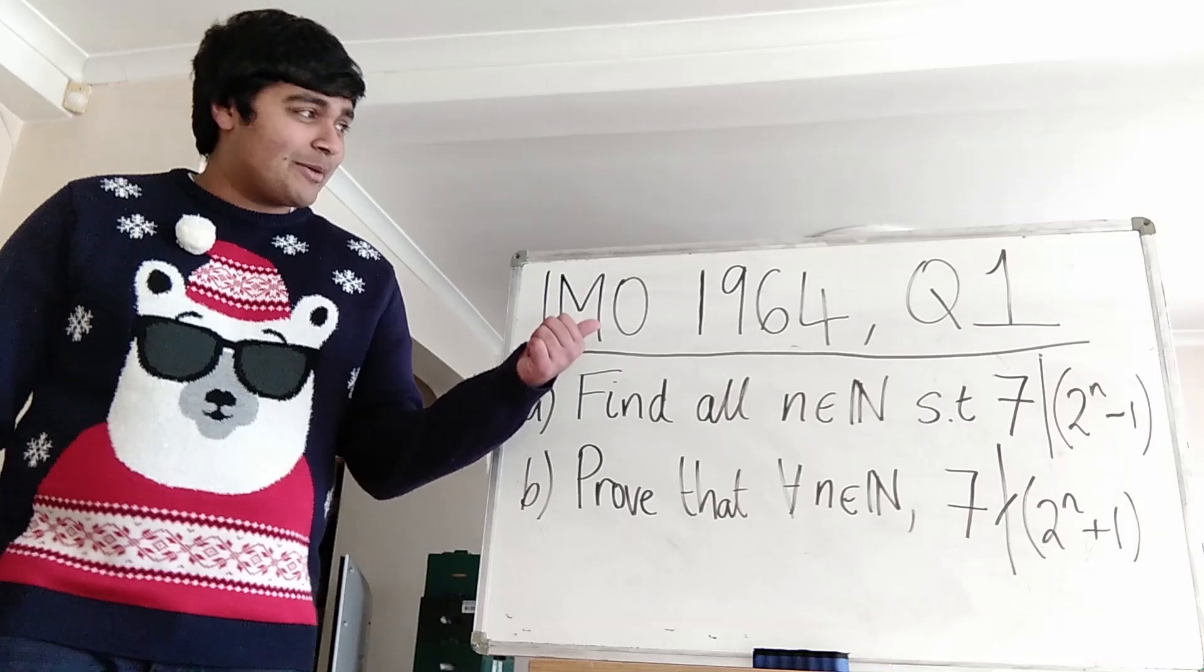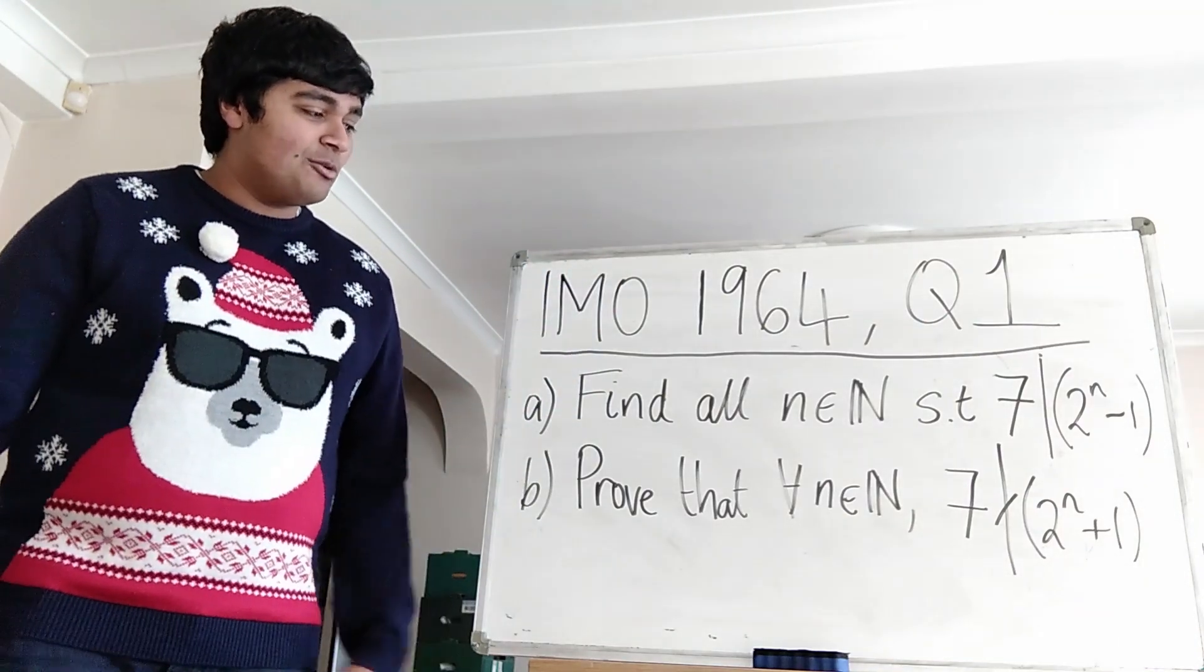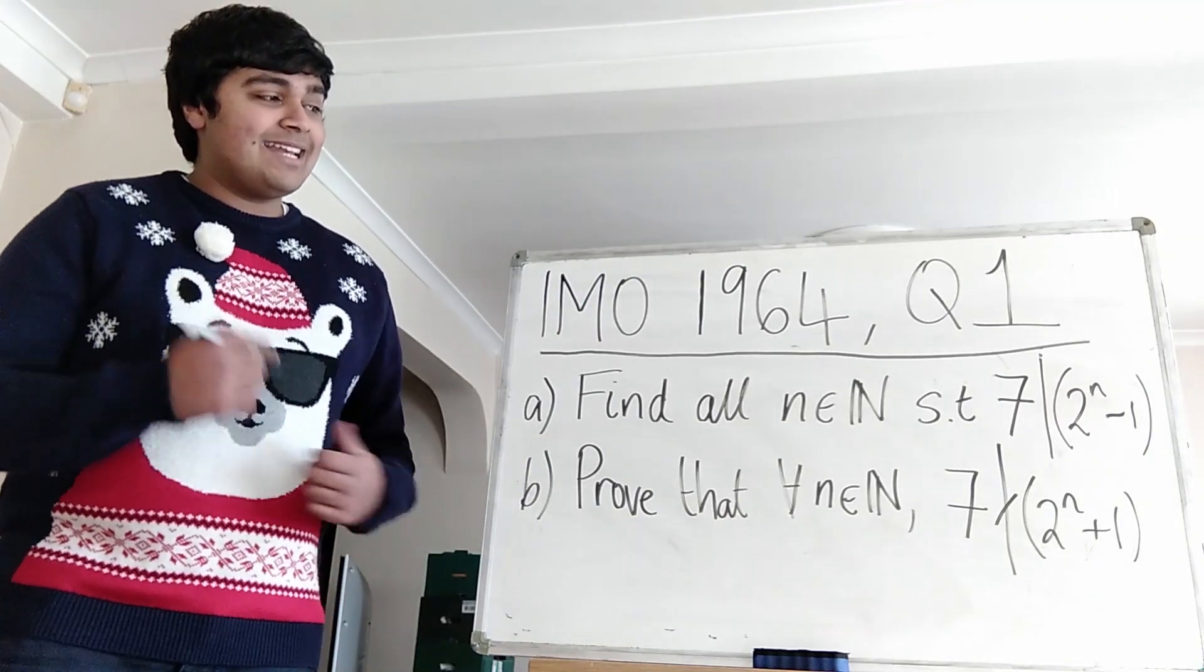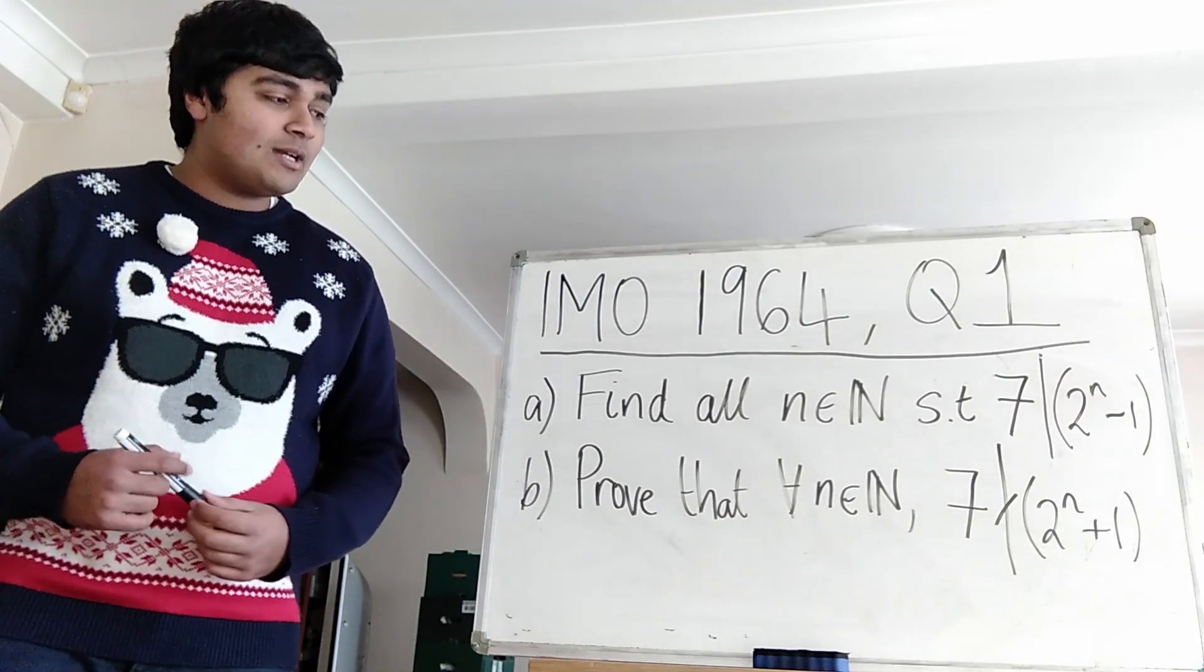Anyway, this is the problem I'm going to be tackling today. It's question one from IMO 1964. Part A and part B. Part A is to find all natural numbers n such that 7 divides 2 to the n minus 1.